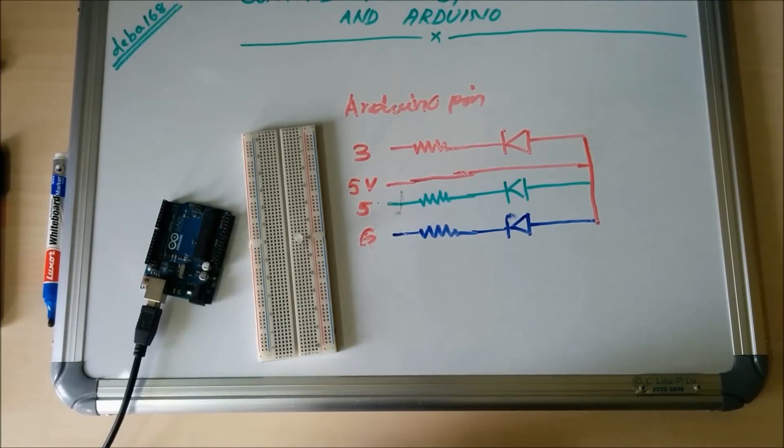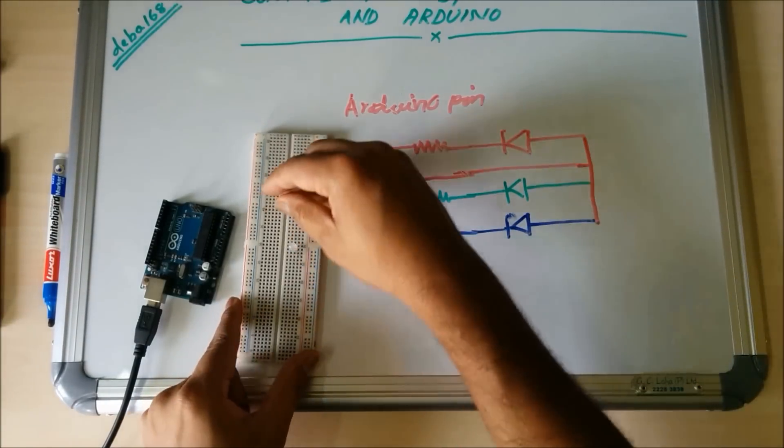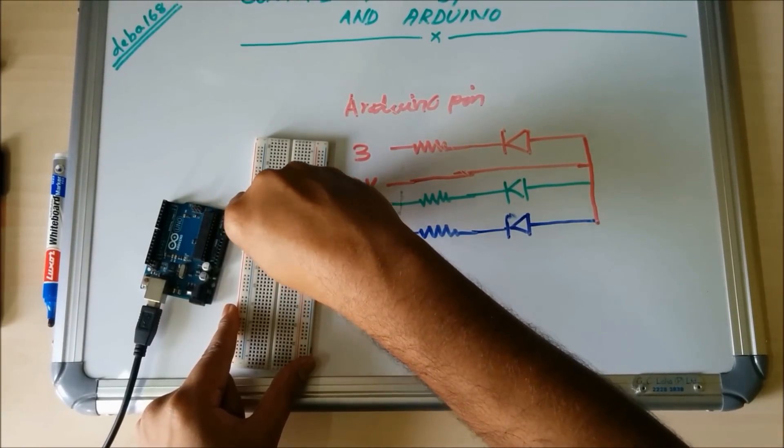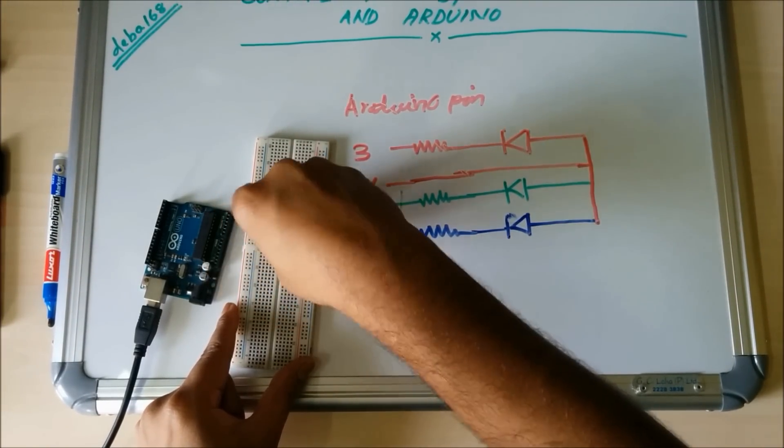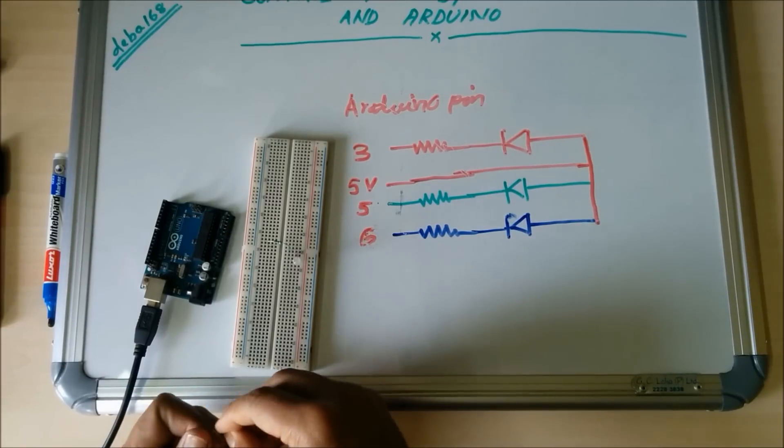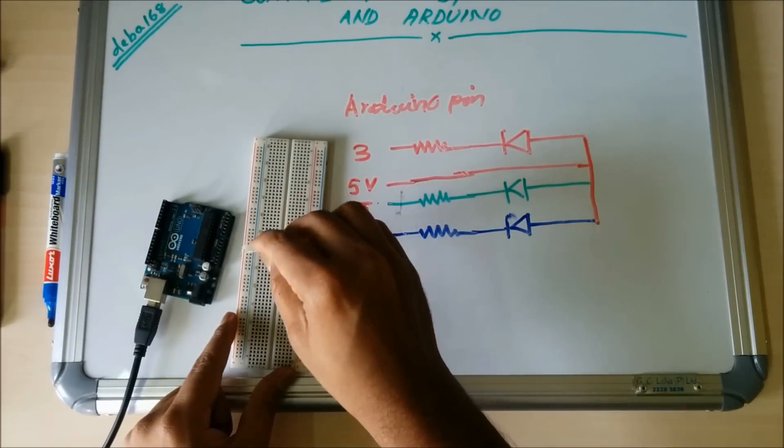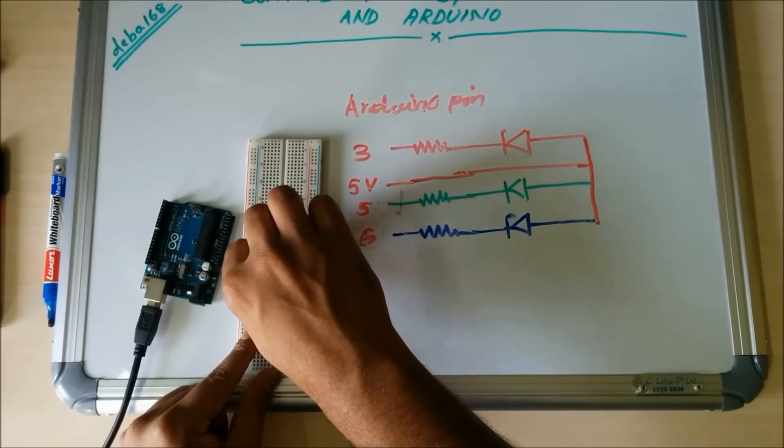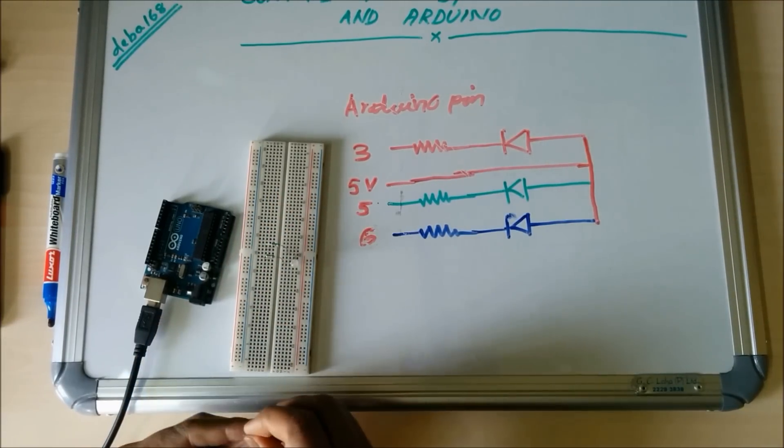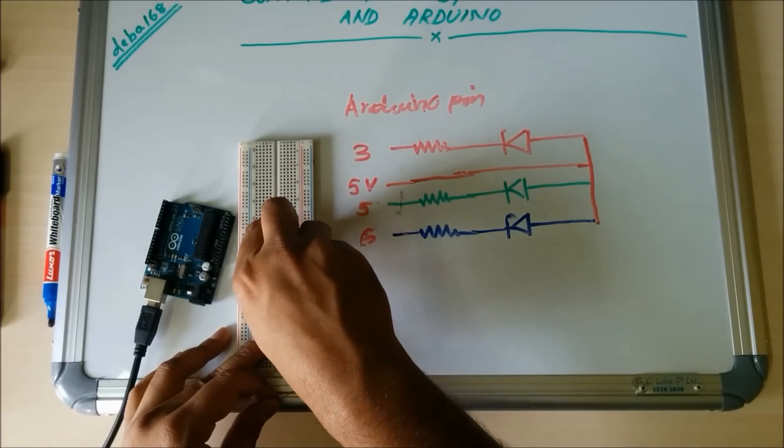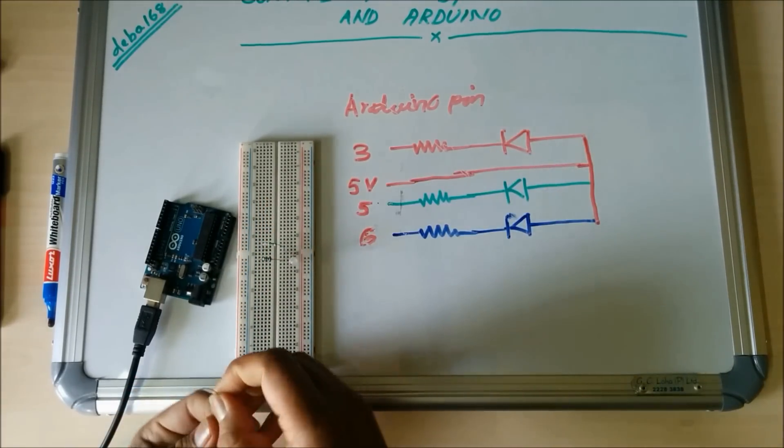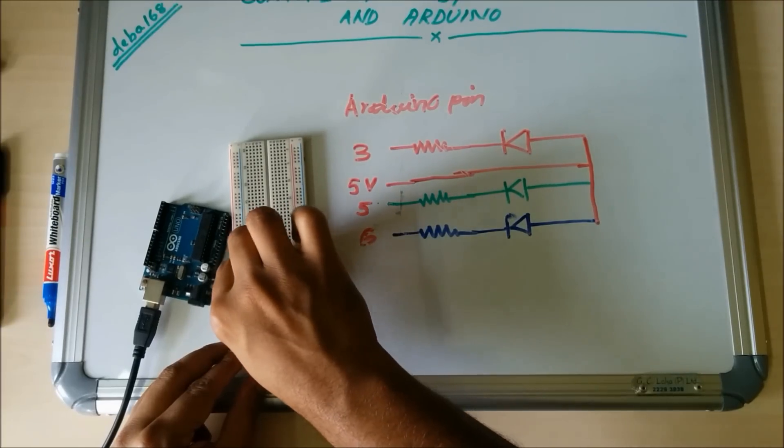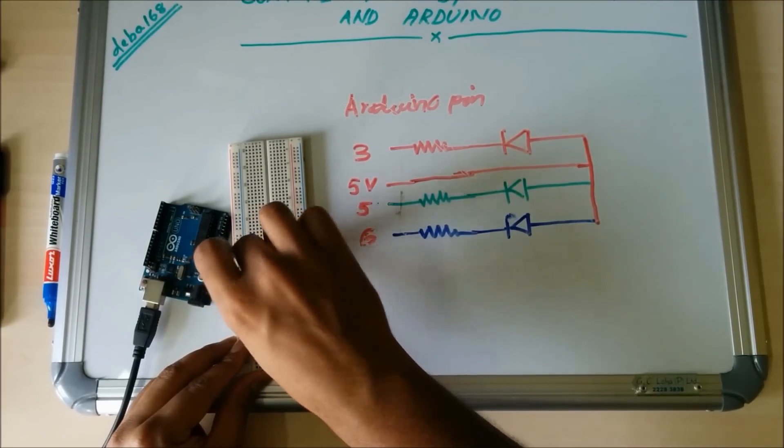Then connect the 220 ohm resistors. The first one is for the red pin, the second one I am leaving because it is the VCC pin, then the green pin, and the last one is blue pin.